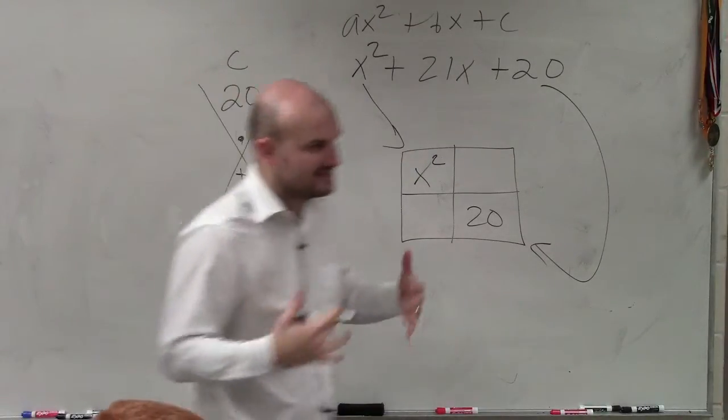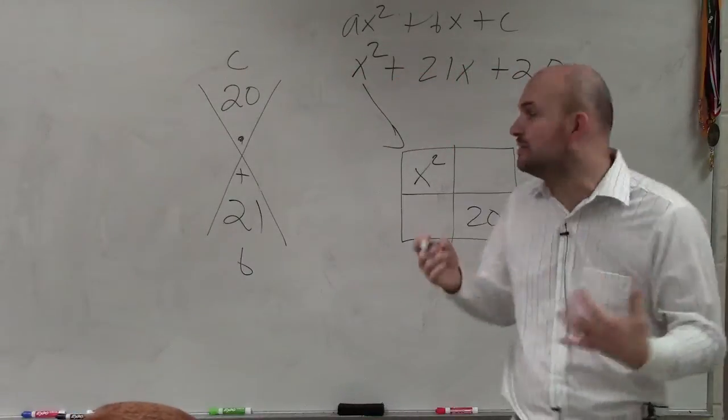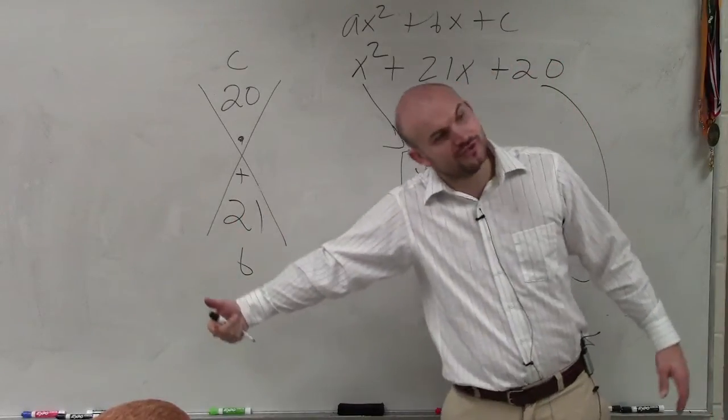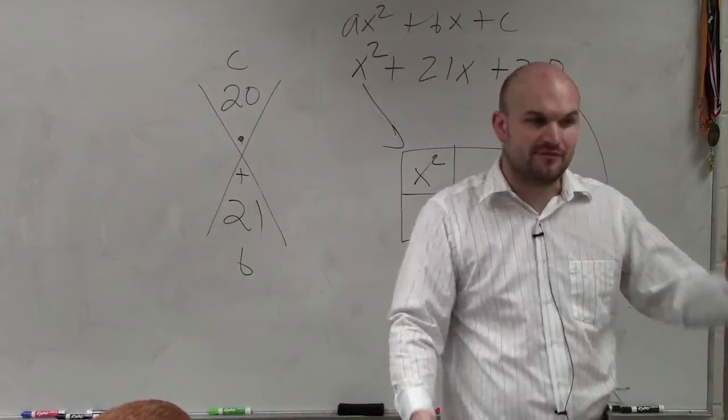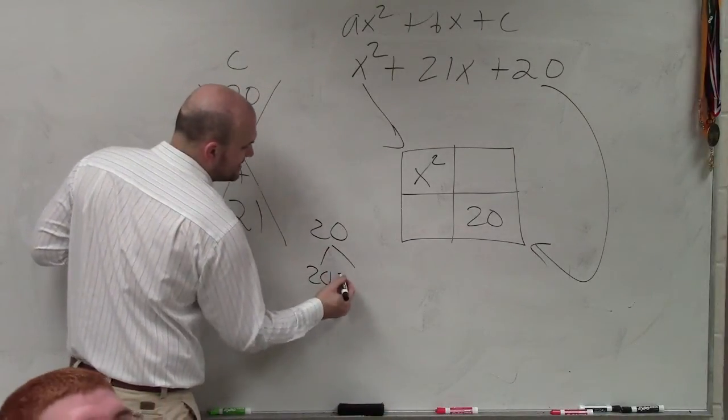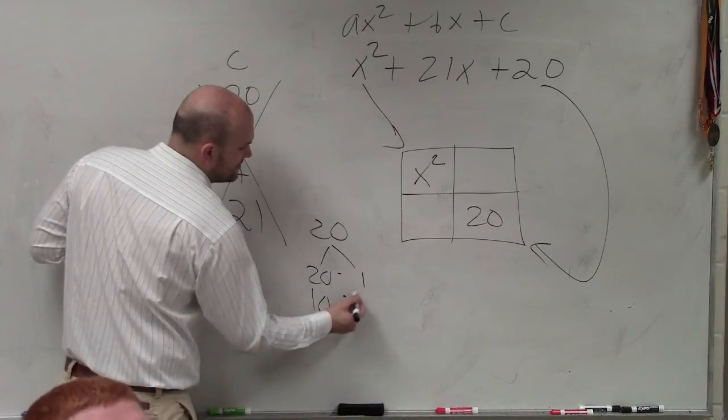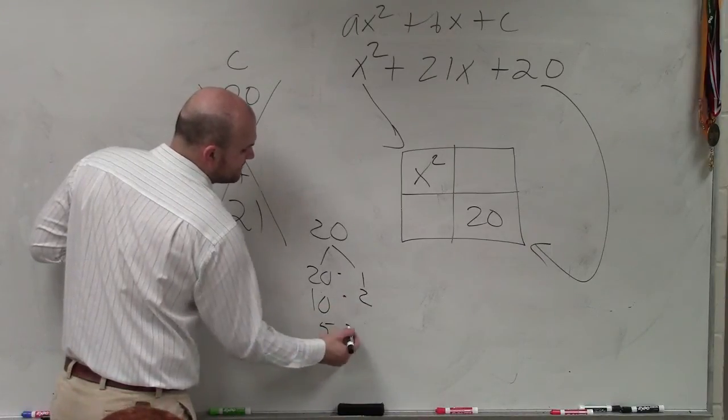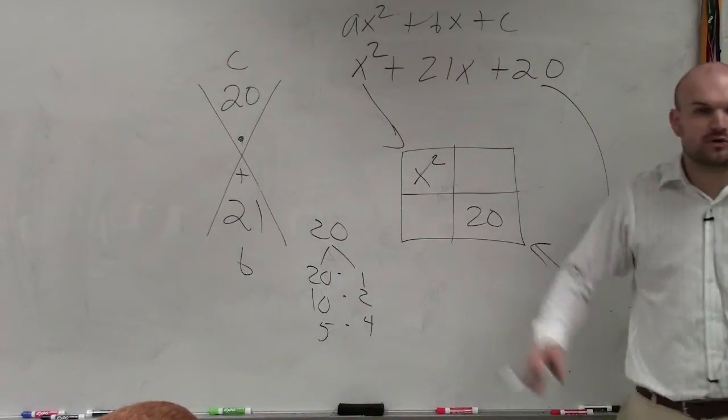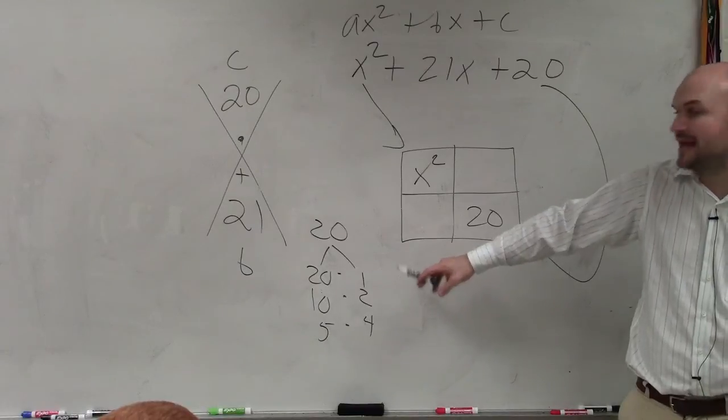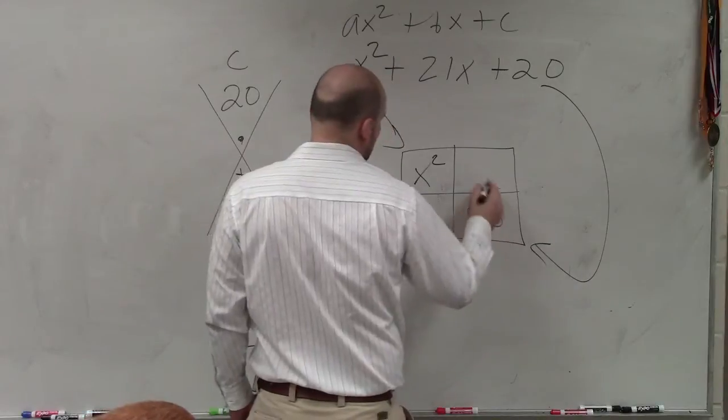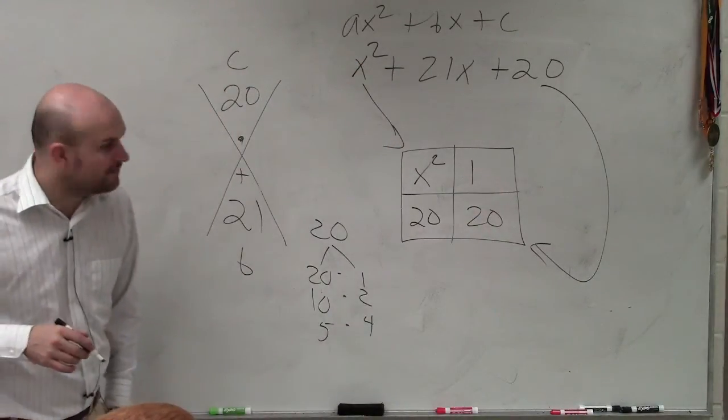And basically, what this diamond is, is a way for us to organize everything so we can identify what two numbers multiply to give me 20 and add to give me 21. And I'm looking for those two numbers. Let's think about two numbers that multiply to give me 20. I have 20 times 1, 10 times 2, 5 times 4, right? Those are all the numbers that multiply to give me 20. Out of those numbers, though, what are the only two that multiply or that add up to give me 21? 20 and 1, right? So I'm going to add 20 and 1 inside of the box.